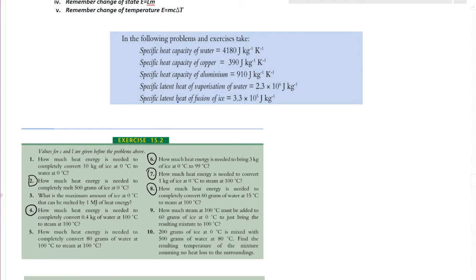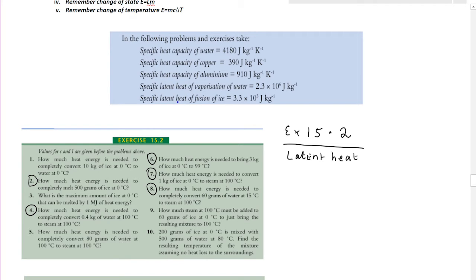We're starting off with Exercise 15.2, looking first at latent heat. Questions one, two, and three only involve latent heat. Let's look at question two: how much heat energy is required to completely melt 500 grams of ice at zero degrees Celsius?